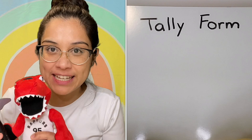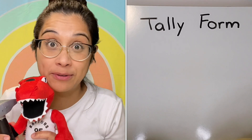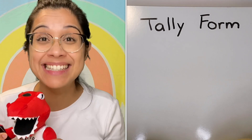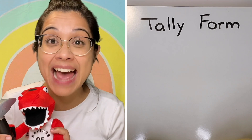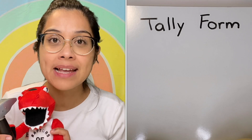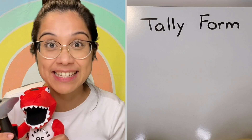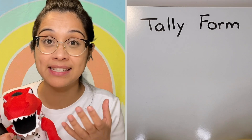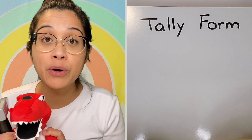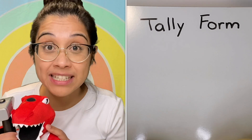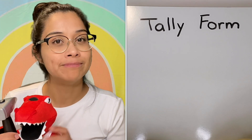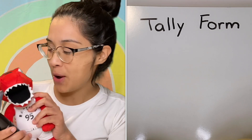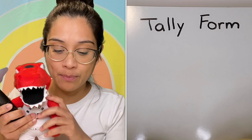My friend Mr. Raptor is here to help us learn all about tally form. One way to represent numbers is using tallies — can you say it with me? Tallies! Tallies is kind of almost like building a fence. The important thing about tallies is that it organizes information into groups of quantities. If that seems a little scary, take a deep breath — we'll walk you through it.